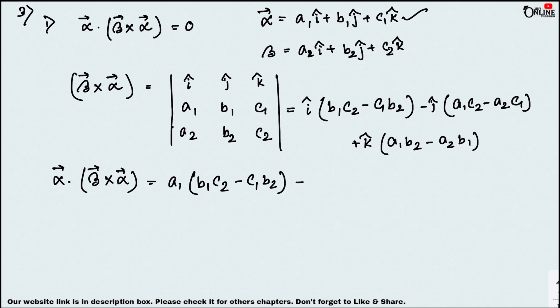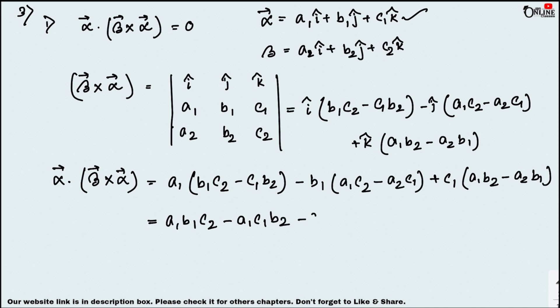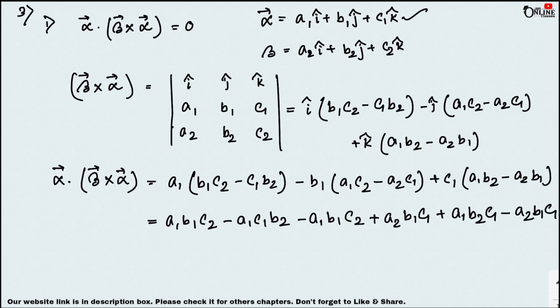Computing the dot product: a1×(b1·c2 − b2·c1) + b1×(a1·c2 − a2·c1) + c1×(a1·b2 − a2·b1). Expanding and collecting terms: a1·b1·c2 cancels with −a1·b1·c2, and a1·c1·b2 cancels with −a1·c1·b2, and a2·b1·c1 cancels with −a2·b1·c1. So the answer is zero, and it is proved.